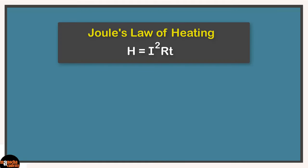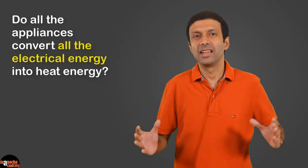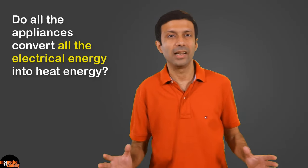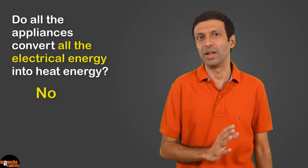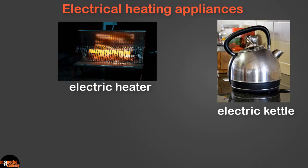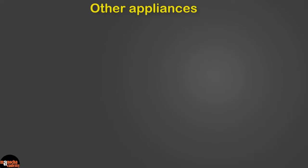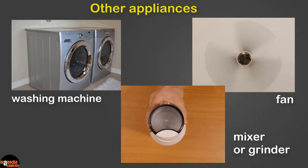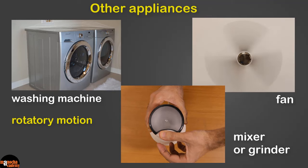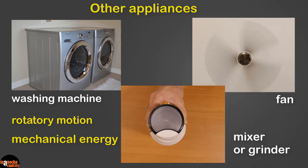Do all appliances that run on electricity convert all the electrical energy into heat energy? No. It's the electrical heating appliances such as electric heater, electric kettle, electric iron, and geyser that convert most of the electrical energy to heat energy. But in other appliances such as a fan, washing machine, mixer or grinder, most of the electrical energy is used to produce rotatory motion, so most is converted to mechanical energy and only a small amount gets converted to heat energy.